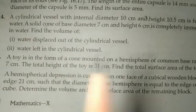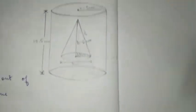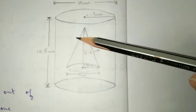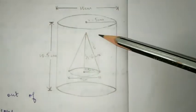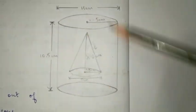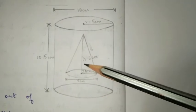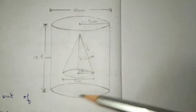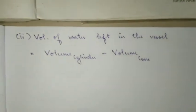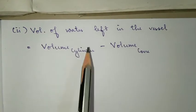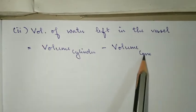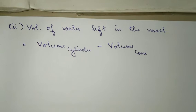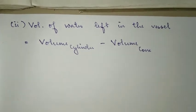Alright, now, for sub number 2, the water left in the cylindrical vessel, the volume can be found out. Volume of cylinder minus the volume displaced gives you the water remaining. So, you have volume of water left in the vessel is equal to volume of the cylinder minus volume of the cone. You will substitute the formula and you will take out common and you will find the answer, okay?